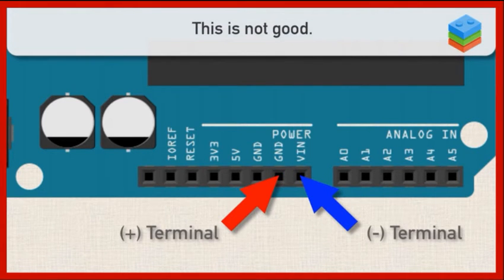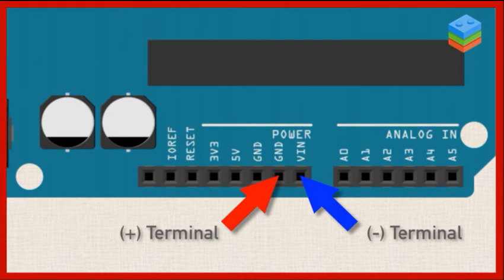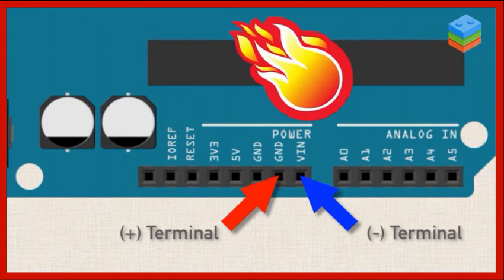But if you switch those pins, so instead of having the positive going to VIN, you have the positive going to ground, if you mistakenly do this, you're pretty much going to fry the microcontroller. And the 5-volt regulator on the Arduino board is also going to be destroyed.